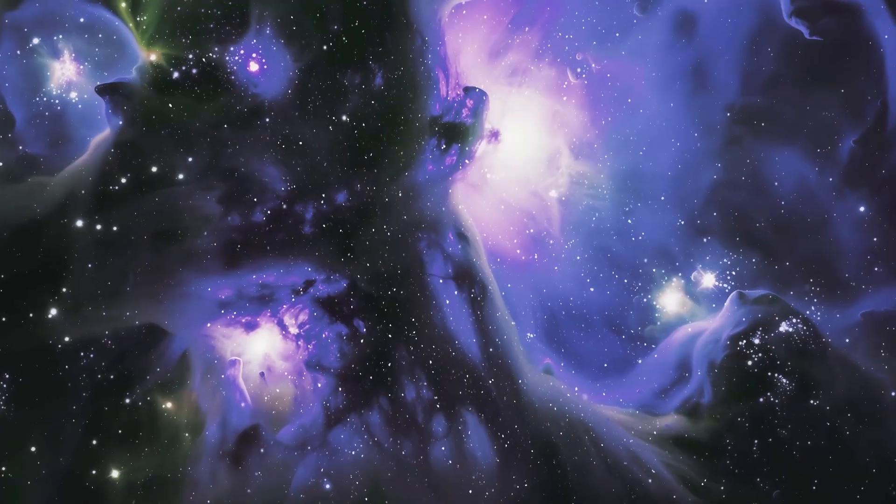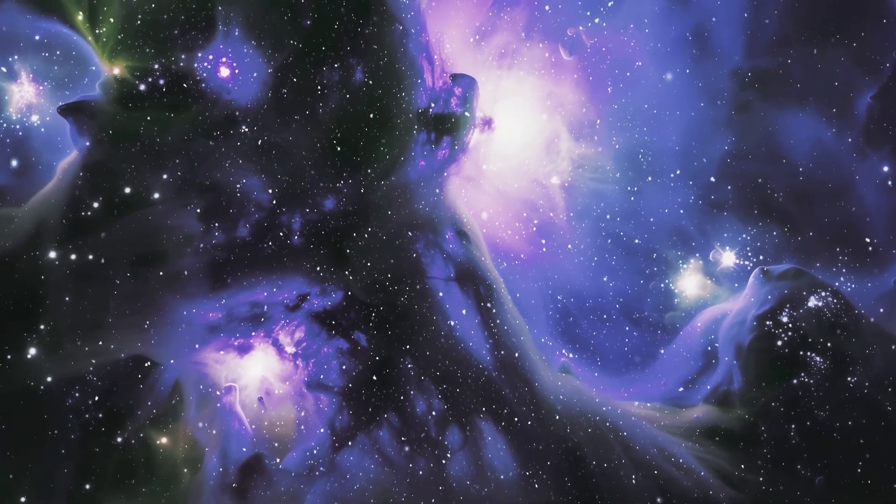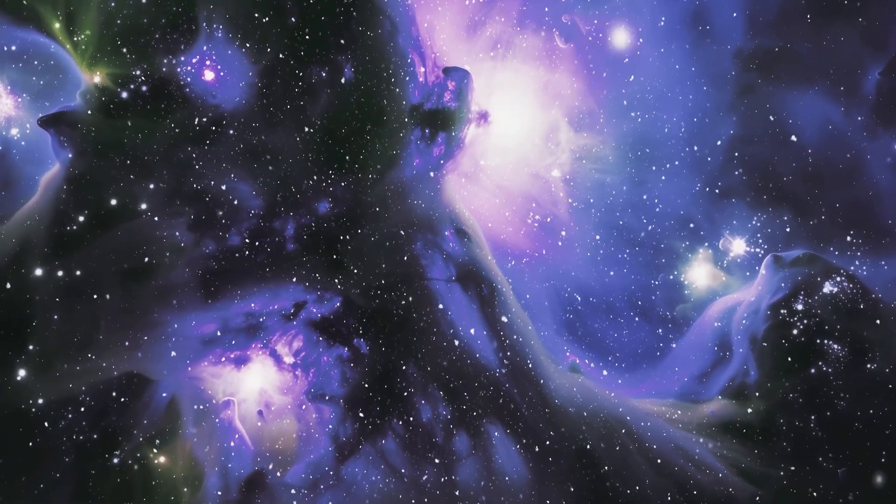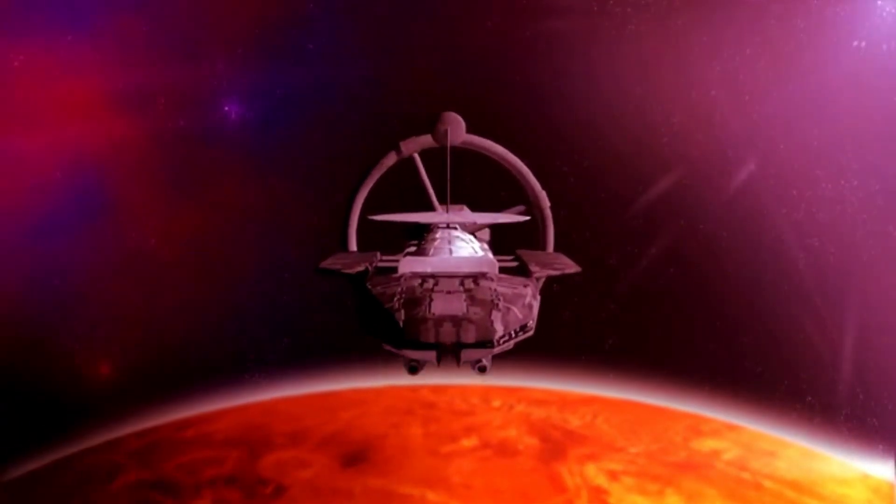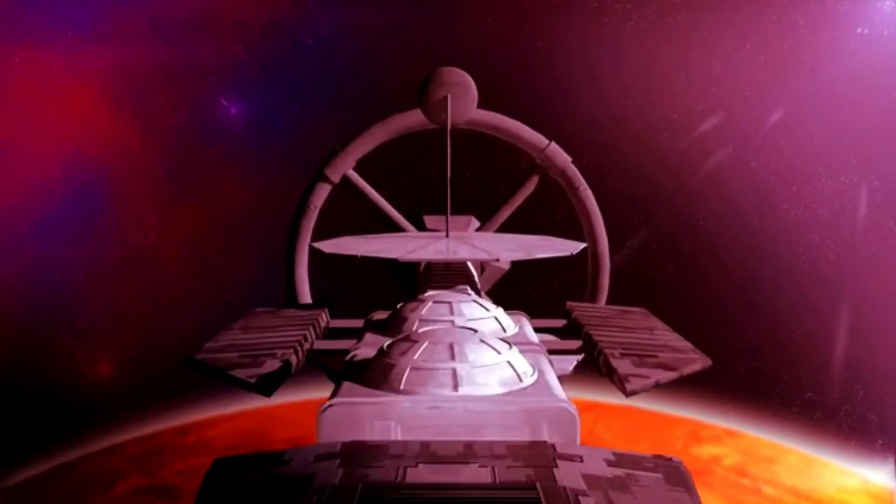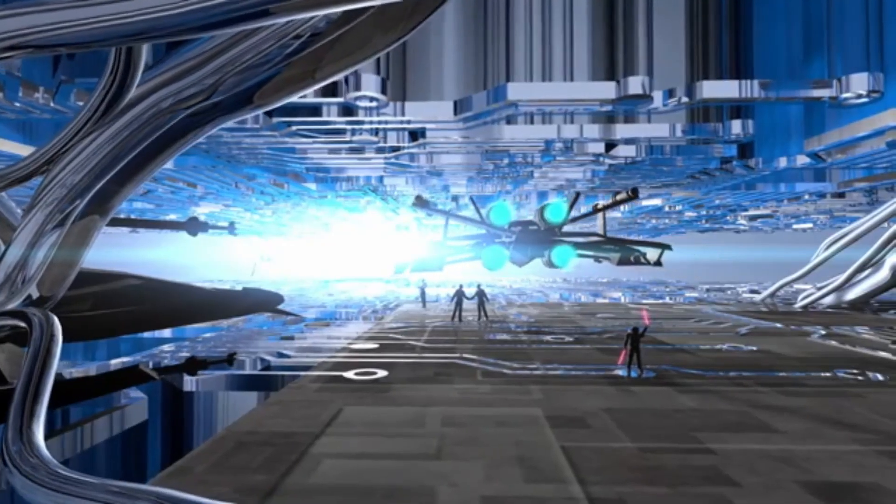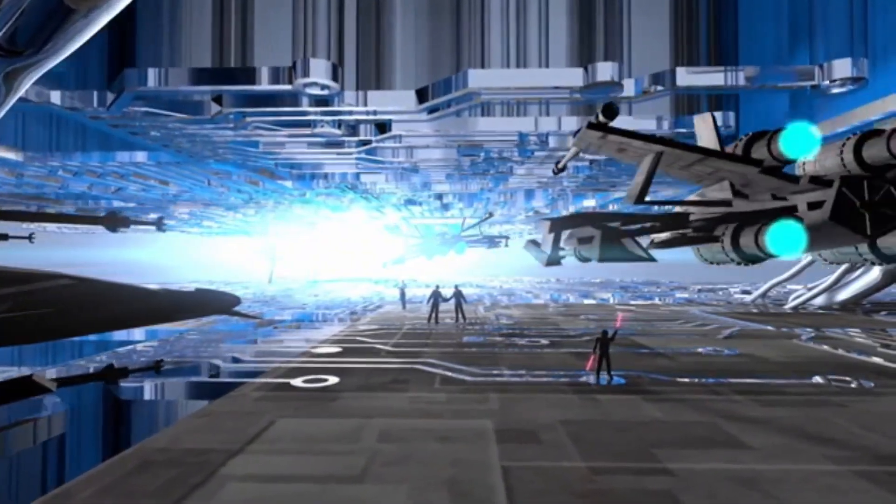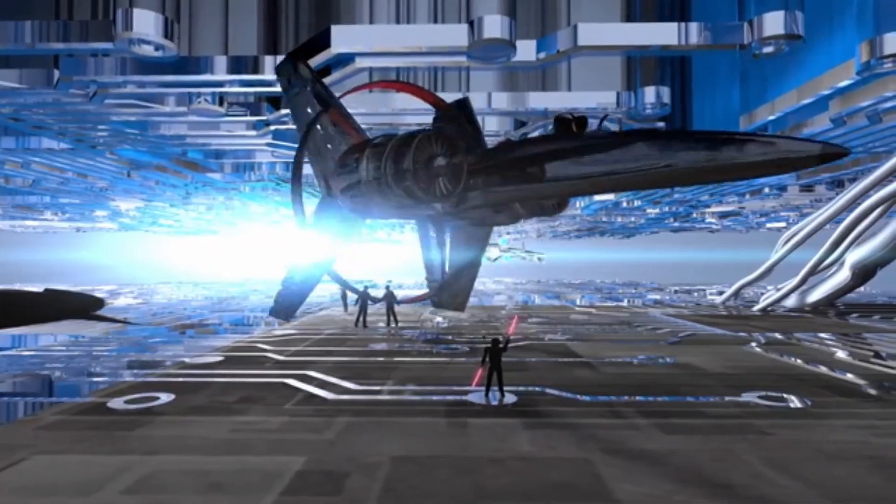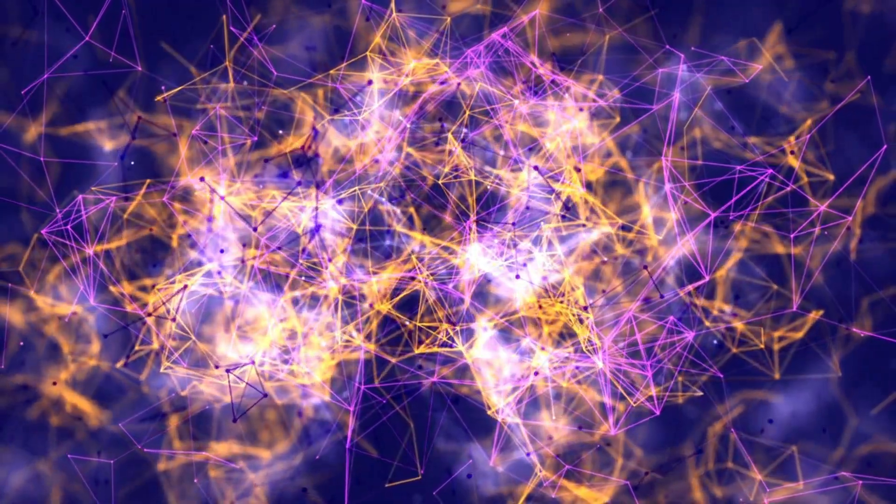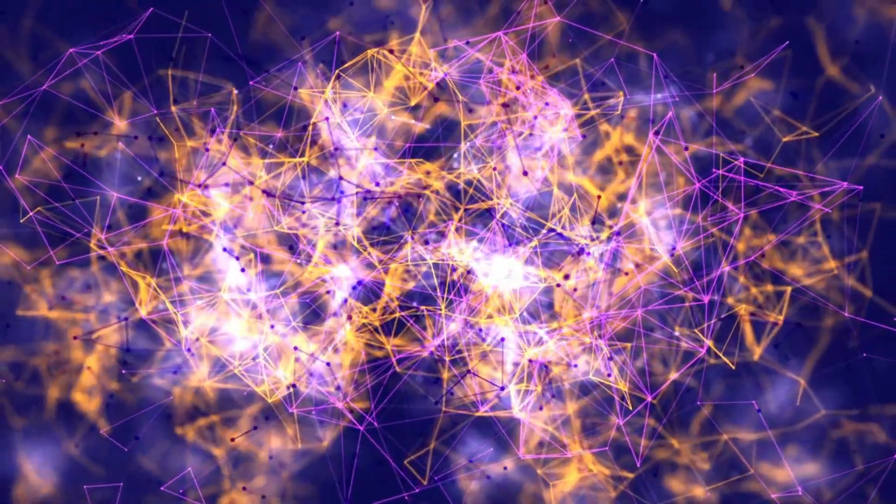This period, known as the Cosmic Dawn, happened around two or three hundred million years after the Big Bang, marking the point when the first stars and galaxies began to form. The process by which this unfolded remains a subject of intense investigation, with theories ranging from the effects of dark matter and dark energy to the interactions between star-forming gas and dust.